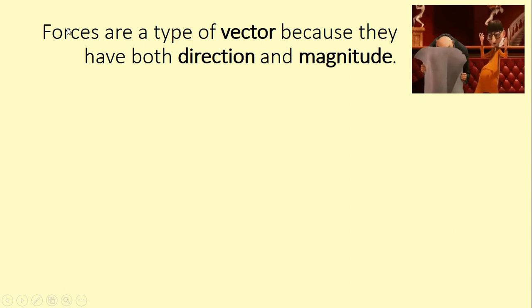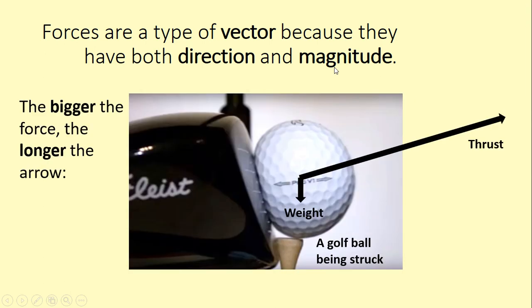Similar to velocity, forces are a vector. They're similar because they have both direction and magnitude, which is the guy called Vector from Despicable Me reminds us. When we draw these arrows, the arrow obviously gives us the direction of the force, but they also give us the magnitude. The bigger the force, the longer the arrow, and they should ideally be to scale with the force as well.